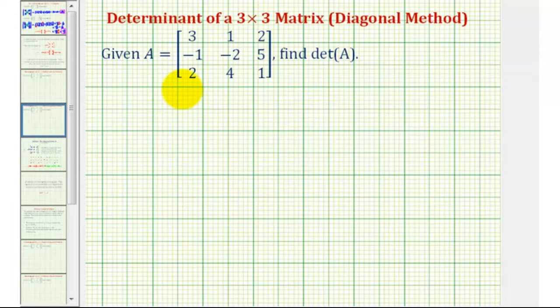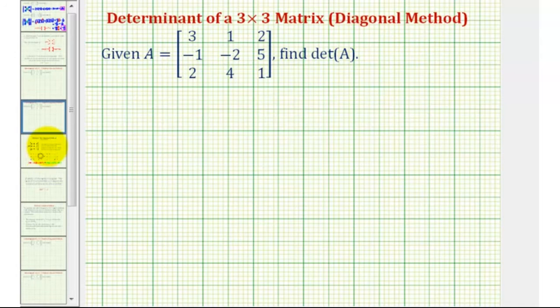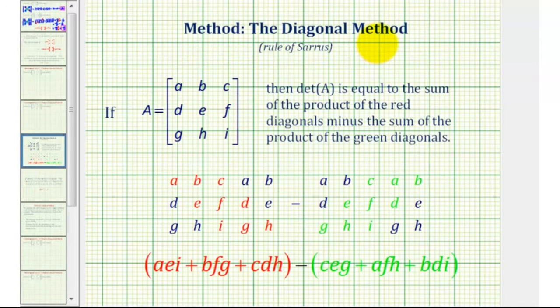Welcome to the first example of finding the determinant of a three by three matrix using the diagonal method. To use the diagonal method to find the determinant of a three by three matrix,